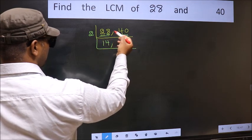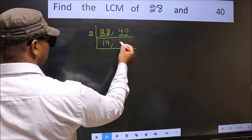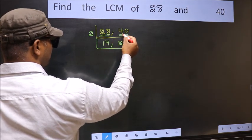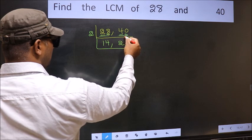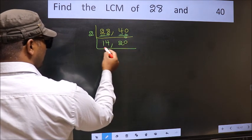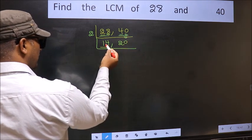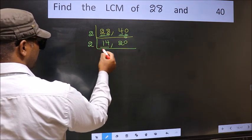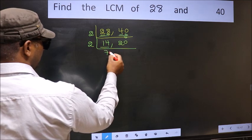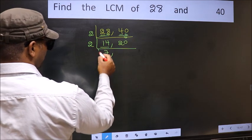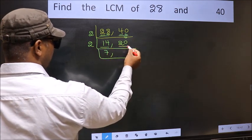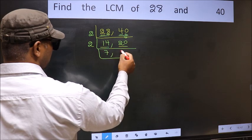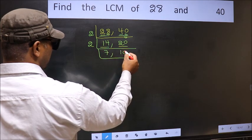For 40: 2 times 2 is 4, and bring down the 0 — so 40 divided by 2 gives 20. Now we have 14 and 20. For 14: 2 times 7 is 14, so 14 divided by 2 gives 7. For 20: 2 times 10 is 20, so 20 divided by 2 gives 10.